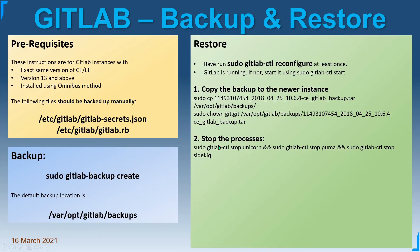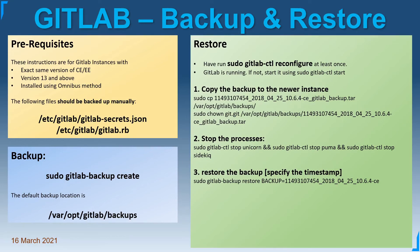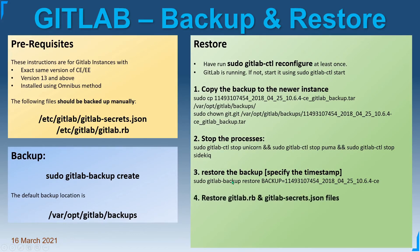In the second step, we need to stop three processes: Unicorn, Puma, and Sidekiq. Once these processes are stopped, it's time to restore the backup. For restoring, you type 'sudo gitlab-backup restore' and provide the argument 'BACKUP=' followed by the timestamp and version number. In this case, this is the Unix timestamp and the date, and here we see the version number — for example, 10.6.4 — and the edition, Community Edition. The rest of the filename will be automatically added, so you don't need to provide the entire filename.